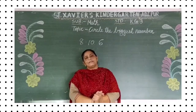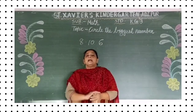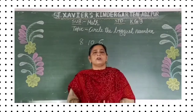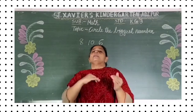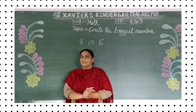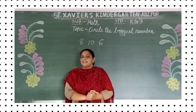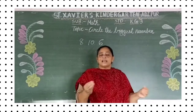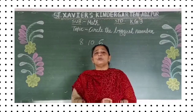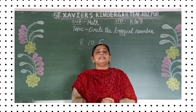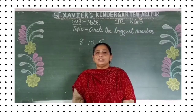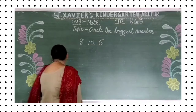Toh aaj humko karna kya hai? What we are going to do — yaan peh board peh thode se numbers diya ho ga, woh number aapko dhekhe, usmeh se bada kons hai, usmeh aapko just circle karna hai. Hei nahi interesting? Toh bhoot sare numbers diya hoange, usmeh se biggest number aapko dhuna hai. You have to identify the biggest number and you have to circle it. Please look at the board.